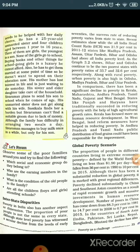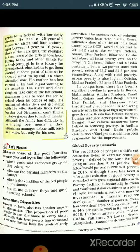His mother has lost interest in life. His sister and elder daughter take care of the household. Shivraman plans to send his son to school when he comes of age. His unmarried sister does not get along with his wife; Shashikala finds her a burden, but Shivraman cannot find a suitable groom due to lack of money. Although the family has difficulty arranging two meals a day, Shivraman manages to buy milk once in a while — but only for his son.